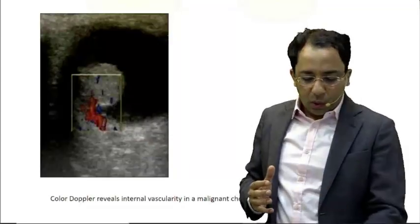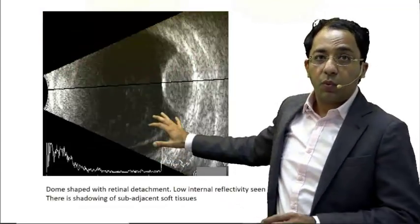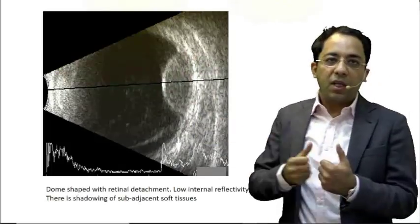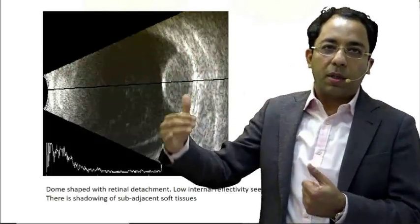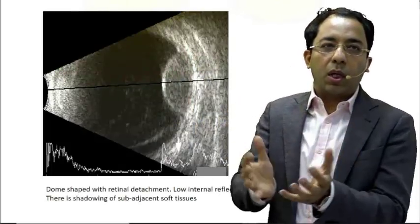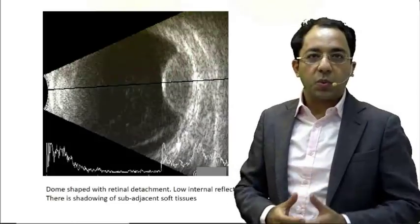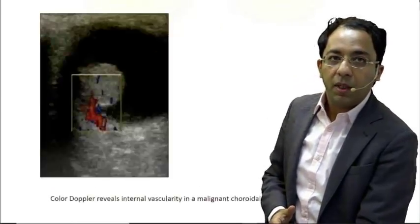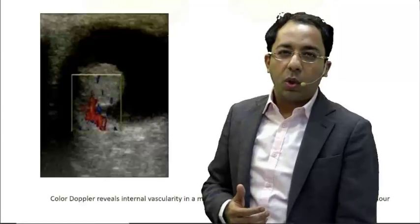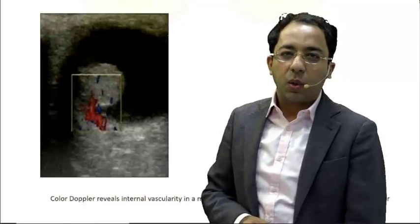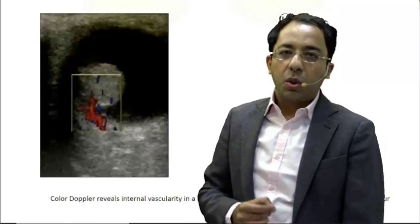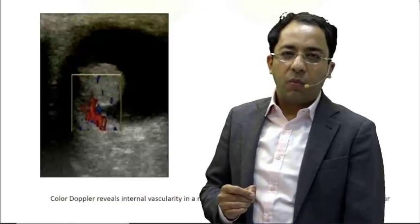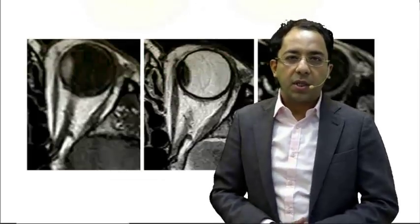Although in this patient on ultrasound we see a dome-shaped mass, if the lesion is breaching Bruch's membrane it might look like a mushroom-shaped lesion as well, which is again a typical picture of melanoma. What can we do radiologically to further the diagnosis?